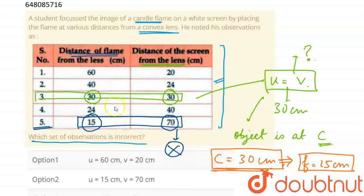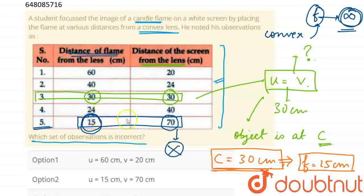Because we know that in a convex lens, if the object is at focus, then the image is at infinity. But the object is at focus here, but the image is not at infinity.